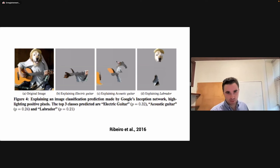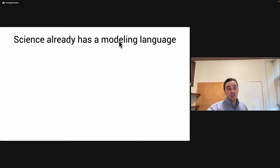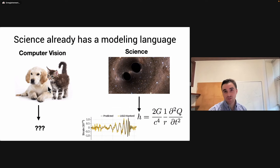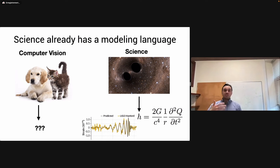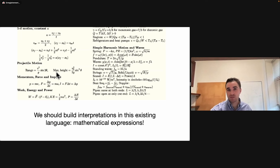Recently people are getting into mechanistic interpretability, which focuses more on how models make predictions. But I think in science we already have a modeling language — we don't need this coarse feature importance idea. Computer vision doesn't have an equation for a dog or a cat, but in science we do have a modeling language, and that is simple symbolic expressions. Any physics cheat sheet is just simple analytic equations, and they're very descriptive of many systems.